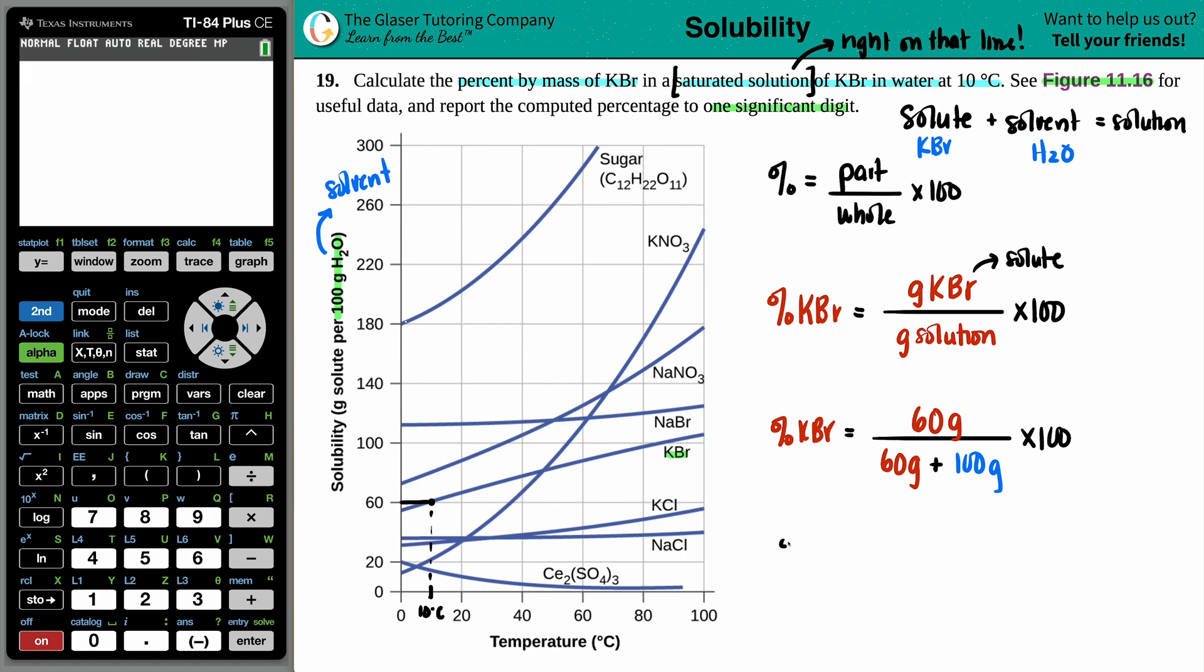So if we just write this out, percent KBR equals something times 100, something divided by, and we get 60 divided by 160 times 100. So if I just go to calc, I do 60 divided by 160 times 100. I could write that 37.5.